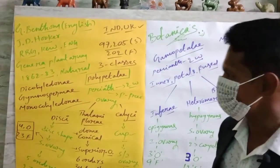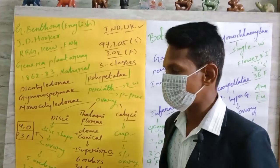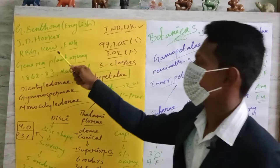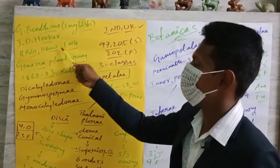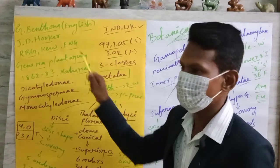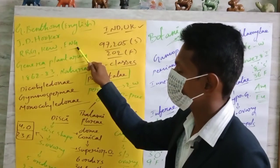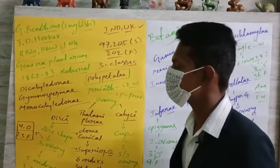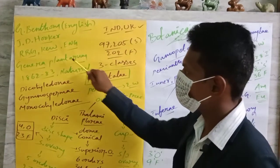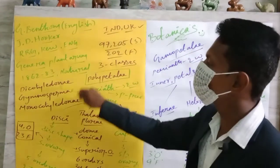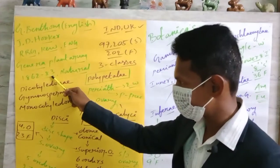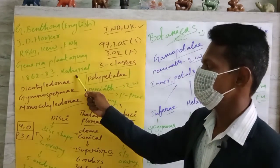The most famous and foremost botanical garden in the world is the Royal Botanical Garden, located at Kew in England. These both scientists wrote the famous book 'Genera Plantarum,' in which this entire huge and unique information is given. This book was published between 1862 and 1883. This entire classification is a natural system of classification.